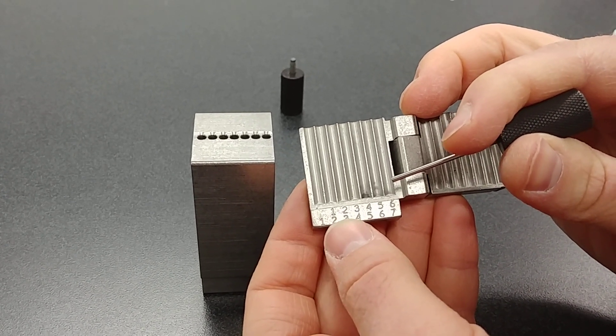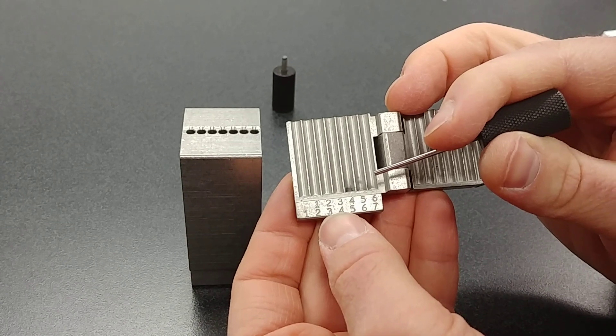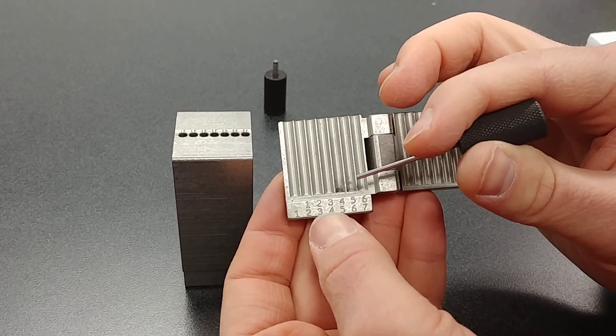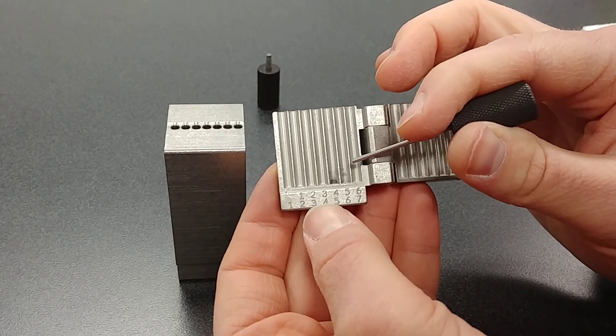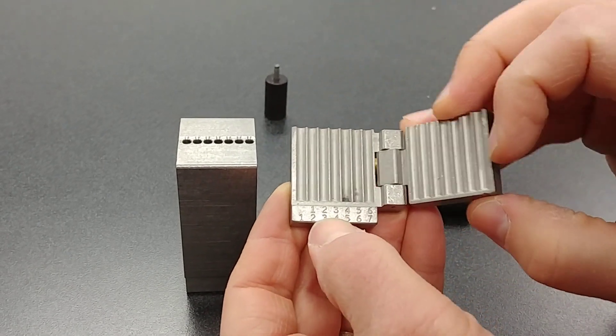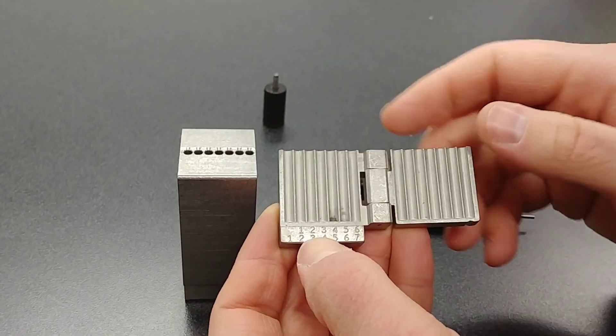And what that's going to allow you to do is if you need to decode an existing cylinder to maybe find out the control key bitting, you can use that, and it's just nice and organized right in here. I've used this several times, and when you open it up, all the pins are actually just really nice in here, easy to grab and use.